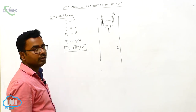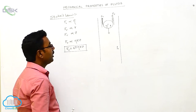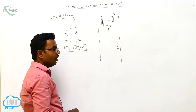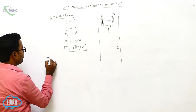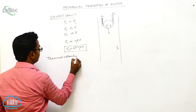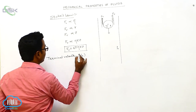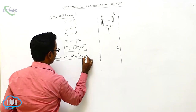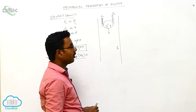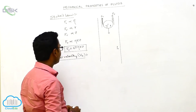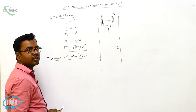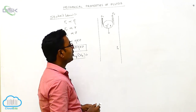Next, we derive the formula for terminal velocity when the sphere is falling down in a fluid column. As the sphere falls, its velocity gradually increases. As velocity increases, viscous force also increases. Along with viscous force, two more forces act on the sphere.